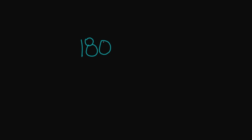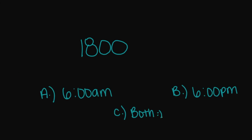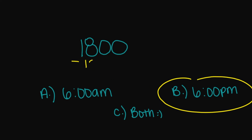Let's say we had 1800 hours and we wanted to convert this into regular time. Is it going to be A, 6 a.m.; B, 6 p.m.; or C, both? This is going to be B, 6 p.m. We're subtracting 12 from our 18, and that takes us to our regular time — 6 p.m. Going from military to regular, you subtract 12.